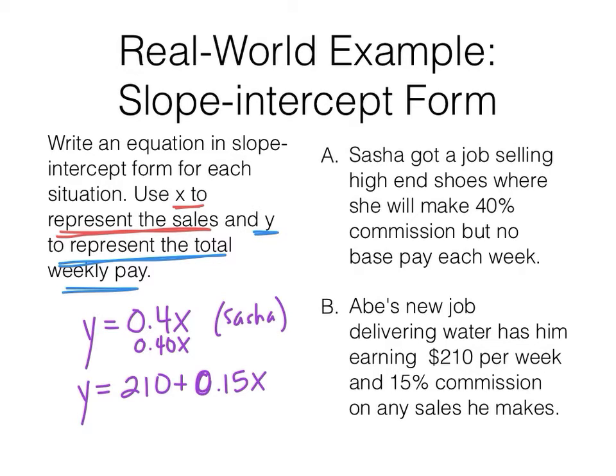In both of these situations, you have a beginning value for each person. If they make zero sales, how much? There's a beginning value for each one, and then there's a rate of change. What are each of those things? With Sasha, what's the beginning value? How much money is she going to make if she makes zero sales? She makes zero dollars.